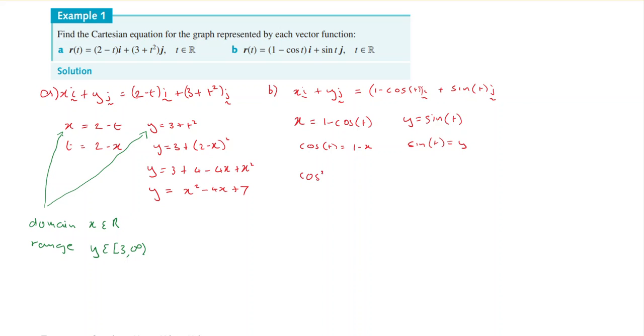So squaring them both and adding, we'll have cos squared t plus sine squared t will be equal to (1 - x) squared plus y squared. So that's just going to be 1 is equal to (1 - x) squared plus y squared. So that's a circle.